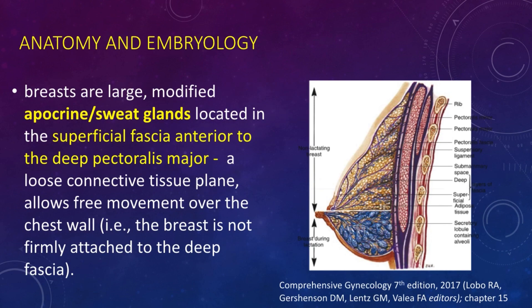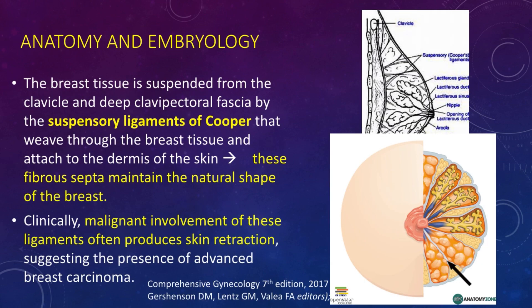Breasts are large modified apocrine or sweat glands located in the superficial fascia, anterior to the deep pectoralis major. This connection is a loose connective tissue plane which allows free movement over the chest wall — the breast is not firmly attached to the deep fascia. The breast tissue is suspended from the clavicle and the deep clavipectoral fascia by the suspensory ligaments of Cooper, which weave through the breast tissue and attach to the dermis of the skin. These fibroseptal structures maintain the natural shape of the breast.